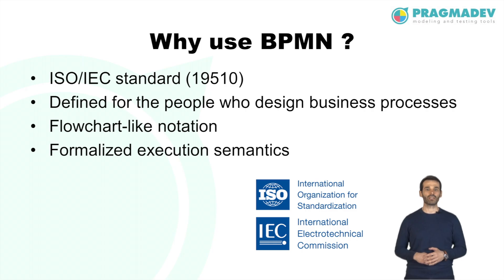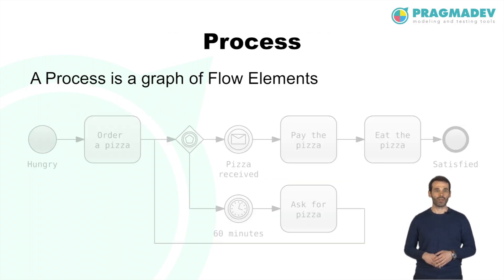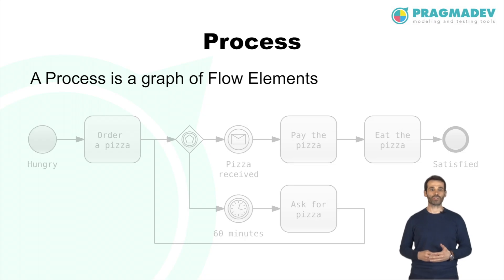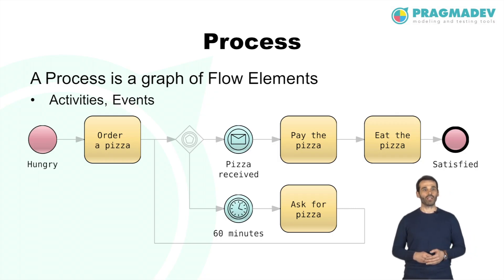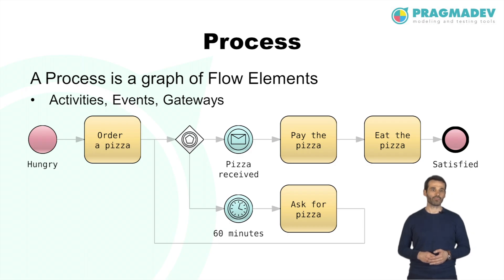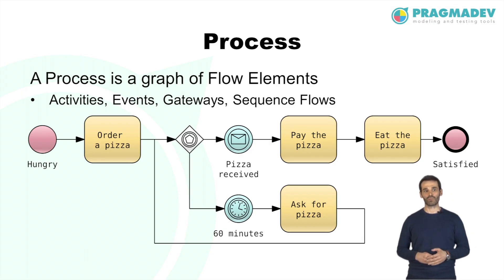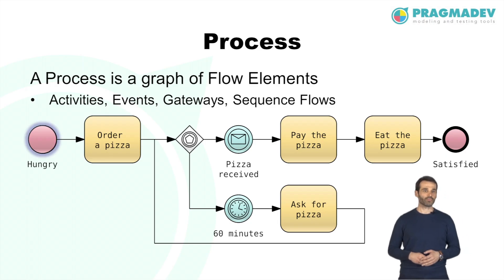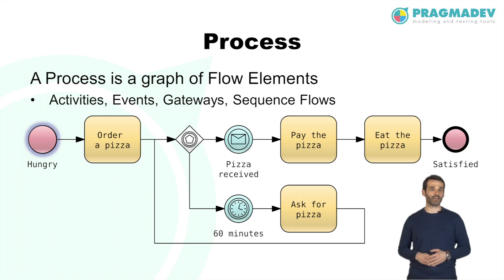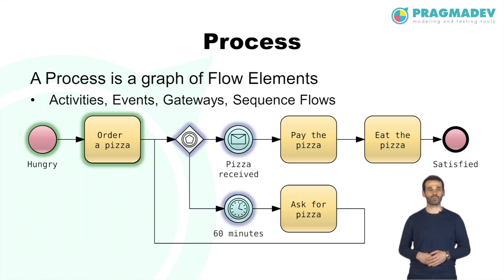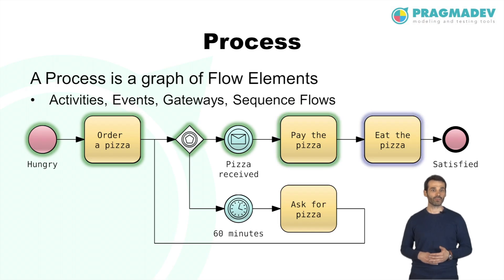A process is a sequence or flow of activities with the objective of carrying out work. In BPMN, a process is depicted as a graph of flow elements — a set of activities, events, and gateways connected using sequence flows. In this example, somebody is feeling hungry, so he decides to order a pizza and wait for delivery within one hour. When the pizza is received, he pays and eats it, feeling satisfied.